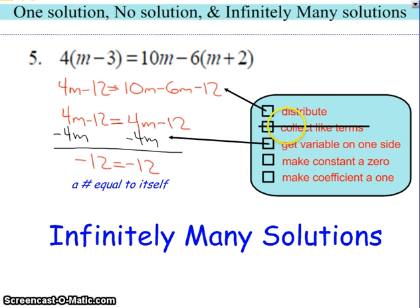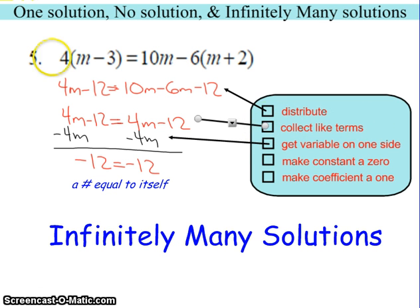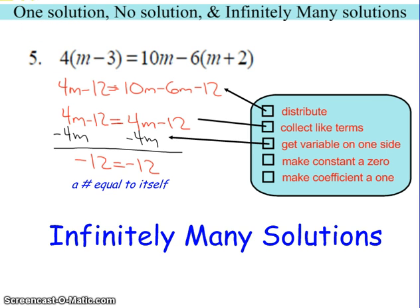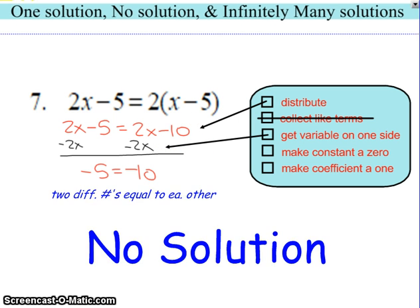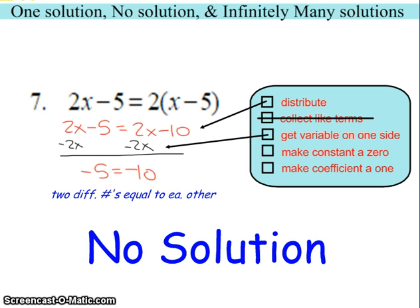Notice that I'm following the same steps that I would follow even when solving one solution problems. For the last example, I've got a distribute to do. I don't have to collect like terms, but when I get the variables on the same side, notice the clue: same number of variables on both sides but different constants — a negative 5 versus a negative 10 — and we end up getting negative 5 equaling negative 10, which isn't true. So this is a case of no solutions. Good luck on this topic, guys, and I'll see you in class.